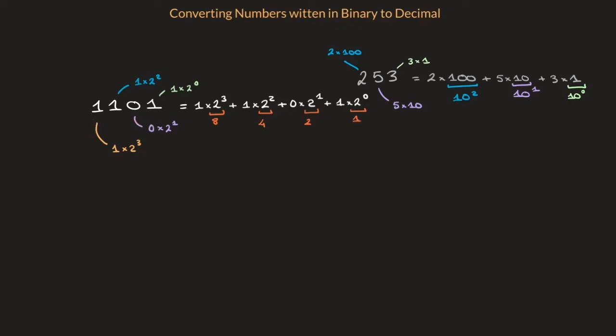So, 1, 1, 0, 1 in binary corresponds to 1 times 8, plus 1 times 4, plus 0 times 2, plus 1 times 1.